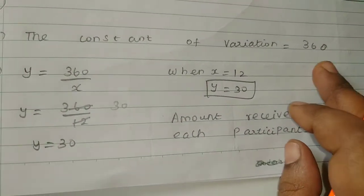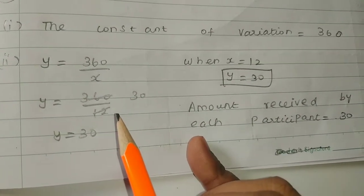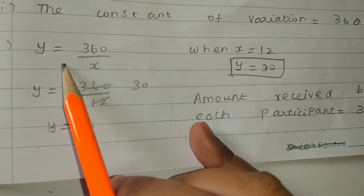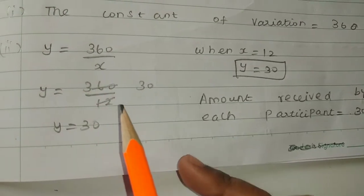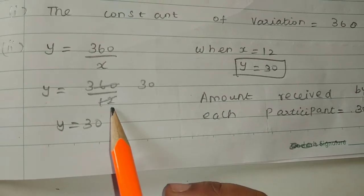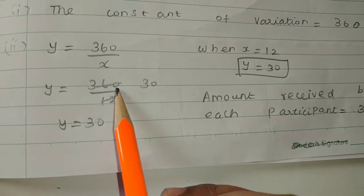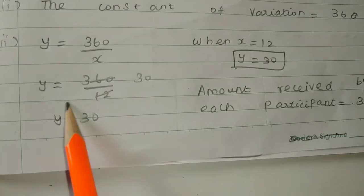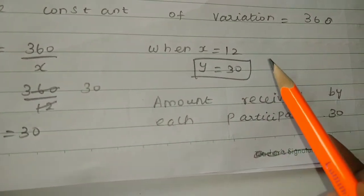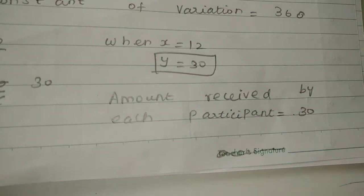The constant of variation K is 360. The equation is Y = 360/X. With X = 12, Y = 360/12 = 30. So the amount received by each participant is equal to 30.